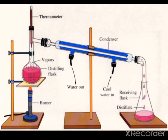Distillation is a method of getting pure liquid from a solution by evaporating it and then condensing the vapors. When the solution is heated, the liquid component evaporates in the form of vapor, as seen in the figure. These vapors are then condensed back into liquid form, which is pure and is called the distillate.